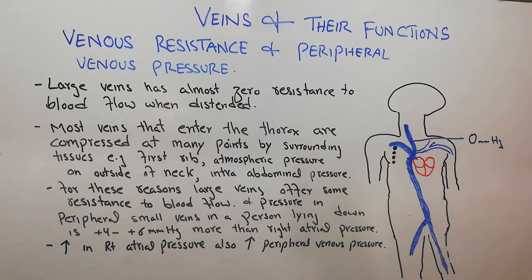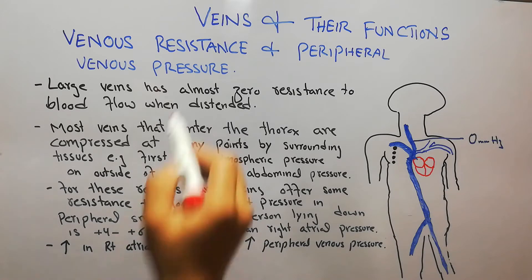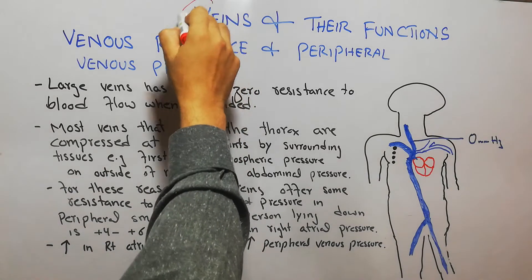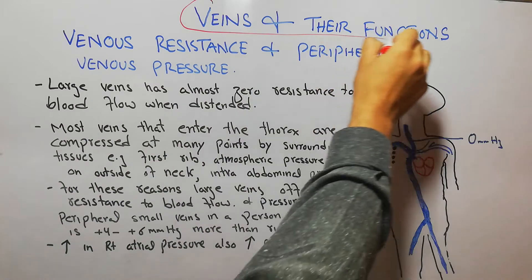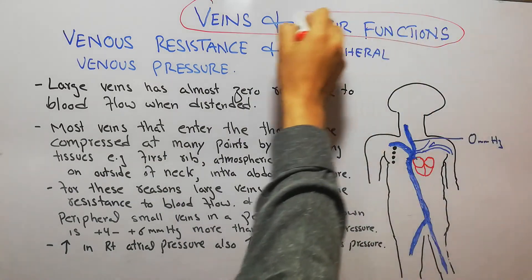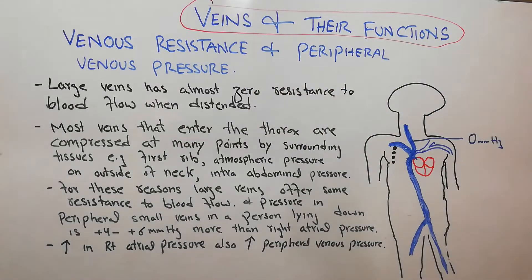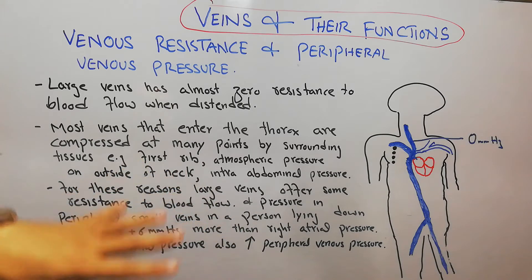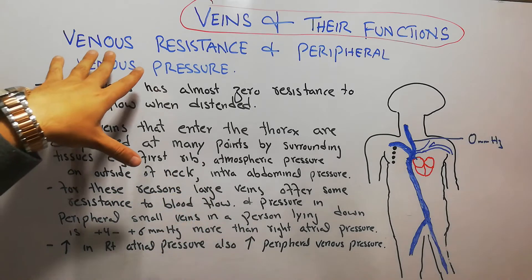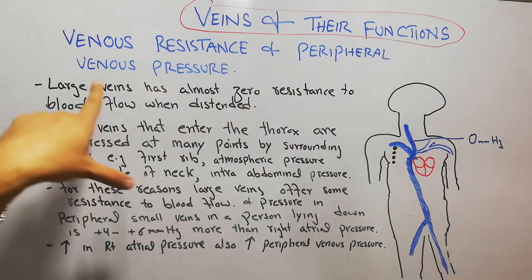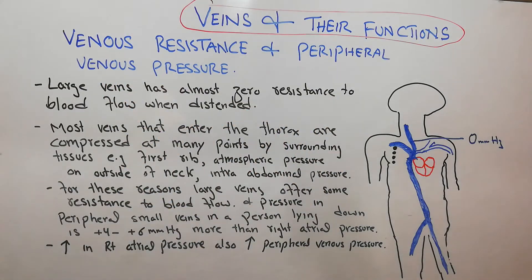We are continuing our lectures about the veins and their functions. We have previously discussed the central venous pressure or the right atrial pressure, and today we are going to discuss venous resistance and the peripheral venous pressure.